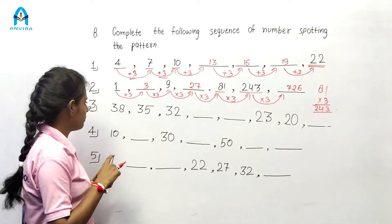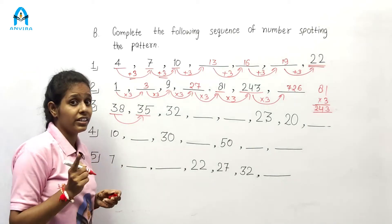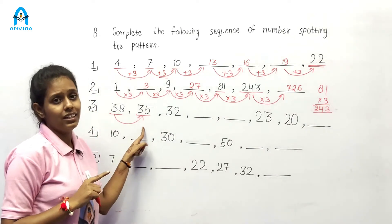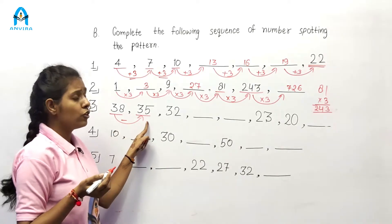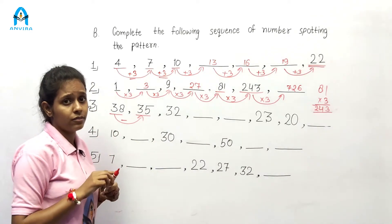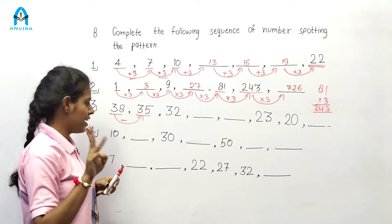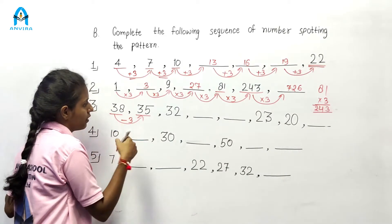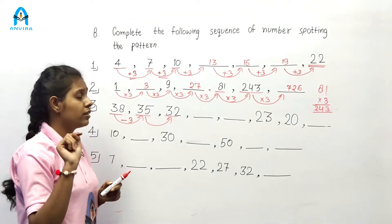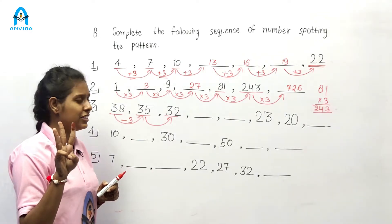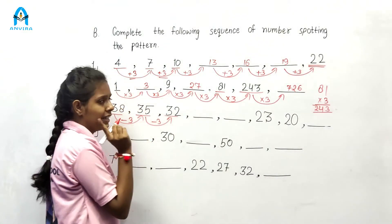Question number 3. We have 38, 35 — find the relation between 38 and 35. This is a decreasing order. Which number is subtracted from 38 to get 35? Counting down: 38, 37, 36, and 35 — that is minus 3. Then from 35 to 32: counting 35, 34, 33, and 32 — also minus 3.